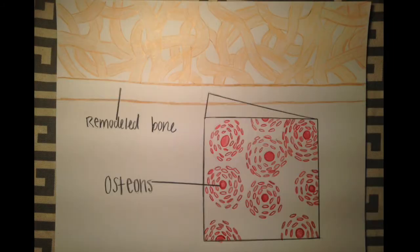Through bone remodeling, osteocytes on the outer edge of the spongy bone can cluster together in groups. These groups are called osteons, the building blocks of compact bone.